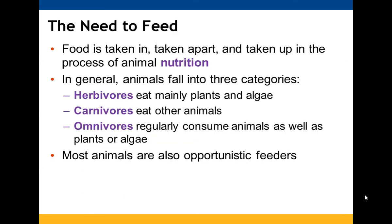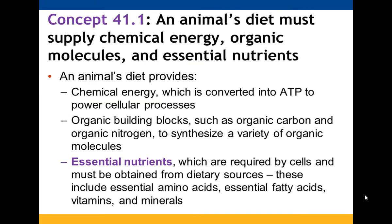Chapter 41 is all about animal nutrition. The idea of animal nutrition is accounting for taking in food, breaking it down, getting it absorbed throughout that particular animal's body systems, and then removal of any unused parts of that food item. We have three different types of animals: herbivores, carnivores, and omnivores. Animals can feed in different ways, which we'll talk about in section two.